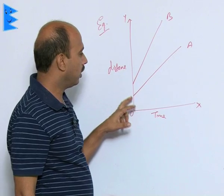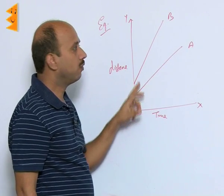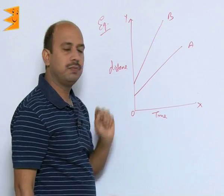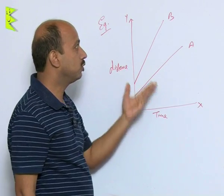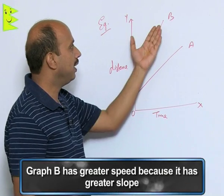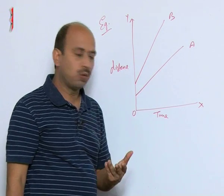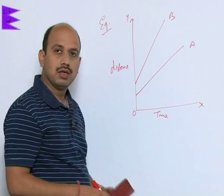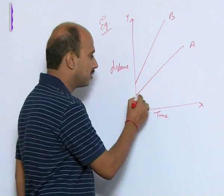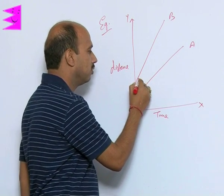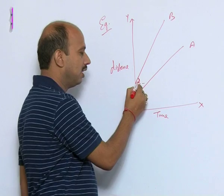Now out of these two, which one has got greater speed? Obviously graph B has got greater speed because it has greater slope. You know we can check slope just by seeing the angle. If you draw the angle with the x axis, here this and here this, you will find this angle is greater than this.